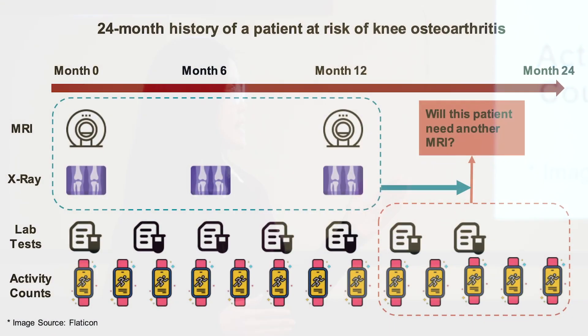Diagnosing and monitoring such chronic disease is challenging because it requires clinicians to process a long series of data with different formats, quality, and frequency. On the screen is an example of a 24-month medical history of a patient at risk, with four different medical data groups: MRI, x-ray, lab tests, and wearable track activity counts.